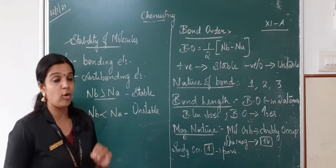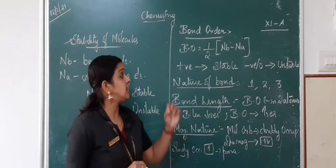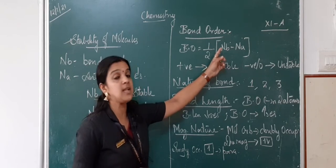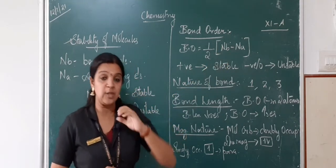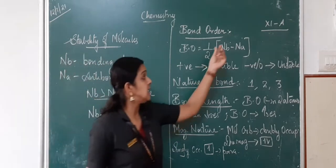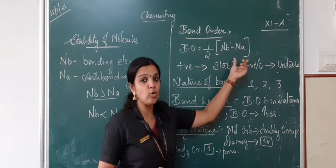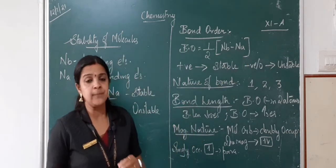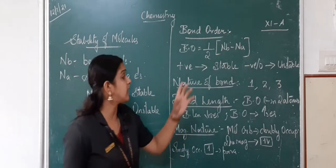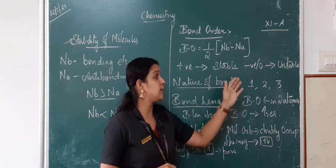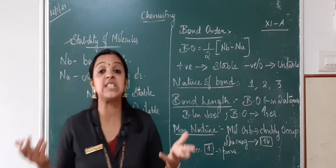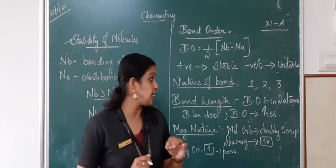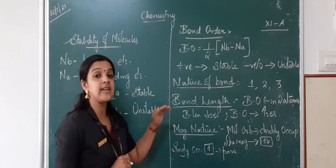The first key term is bond order. Bond order is half of NB minus NA — that is, (NB − NA) / 2. If you have a positive bond order, the given molecule is highly stable. If you have a negative or zero bond order, the given molecule will be unstable.